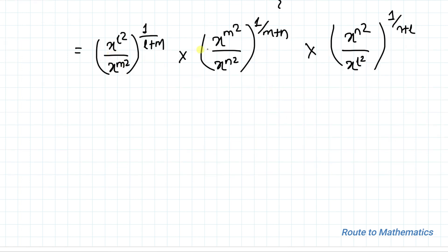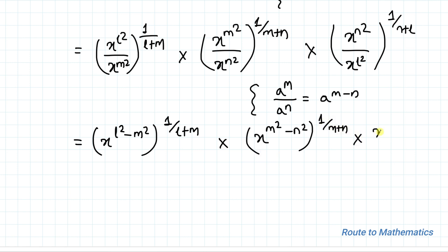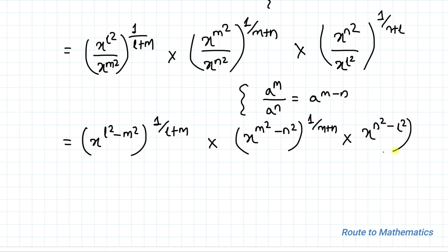Here you can see that all the bases are the same, that is x. So we apply the exponential rule that a to the power m divided by a to the power n equals a to the power m minus n. Applying this rule, we get x to the power (l squared minus m squared) whole to the power 1 by (l+m), multiplied with x to the power (m squared minus n squared) whole to the power 1 by (m+n), multiplied with x to the power (n squared minus l squared) whole to the power 1 by (n+l).